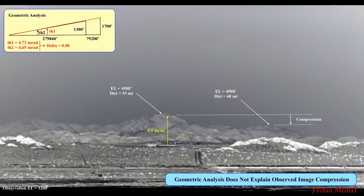The mountain should be about at the same vertical height as the Quarzite mountain, but it's not. It's been compressed down. And when I say compression, it's relative to geometry and perspective. So something else — there's another phenomenon that is acting on top of regular geometric perspective changes. That's this image compression.